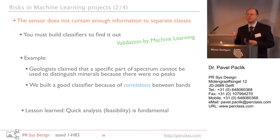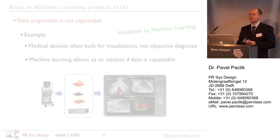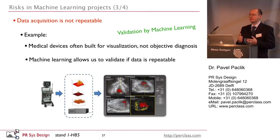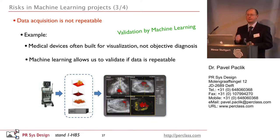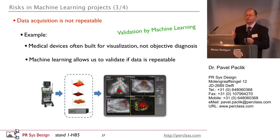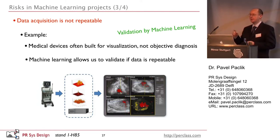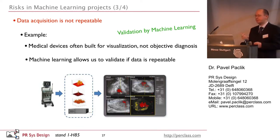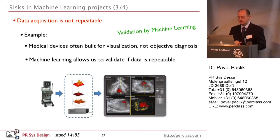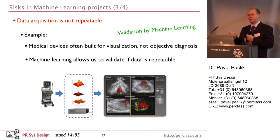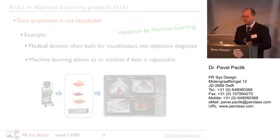Another very important risk: data acquisition must be repeatable for these methods. This sounds obvious but sometimes it's not. In medical projects we found that many medical devices are built for visualization rather than objective diagnostics, with lots of non-linear tweaking of the original signal. Machine learning can again act as a validation tool to check whether you actually have a repeatable data acquisition process.